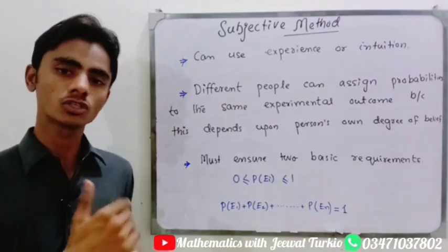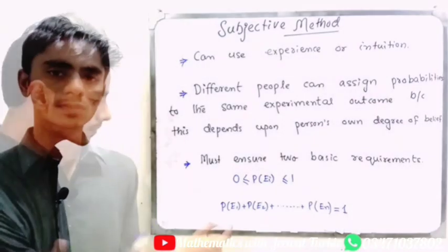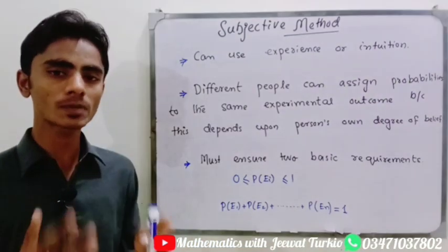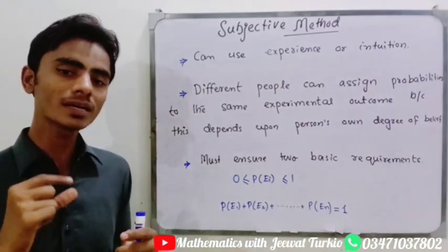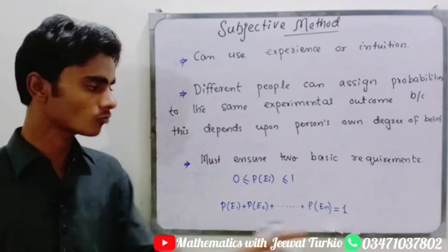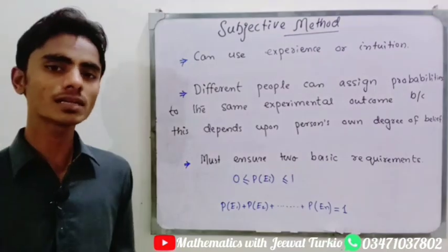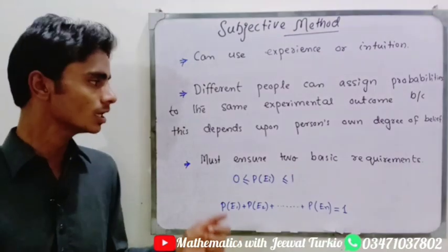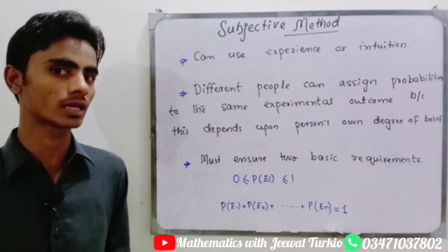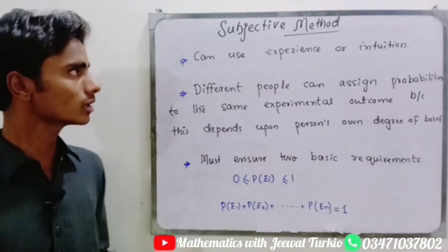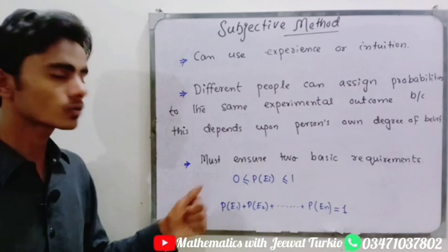Whatever assigned probability an experimental outcome has, it must be from 0 to 1, and the sum of all probabilities must be equal to one. In the classical and relative frequency methods, these basic requirements are already automatically fulfilled, so in the subjective method we simply need to make sure these requirements are satisfied.